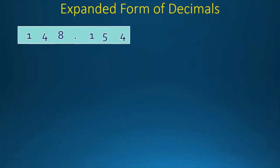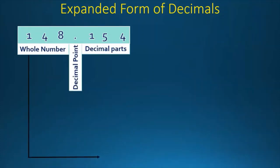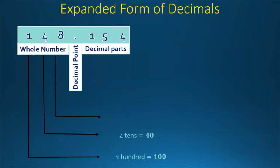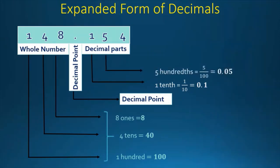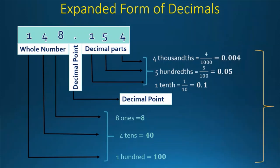Now let's find the expanded form of a decimal. Let's take the same example: 148.154. We know what the whole number is, the decimal point, and the decimal part. So: 1 times 100 equals 100; 4 times 10 equals 40; 8 times 1 equals 8. That is the whole number part. Then for the decimal part: 1 by 10 equals 0.1; 5 by 100 equals 0.05; 4 by 1000 equals 0.004. This is the expanded form of the decimal.